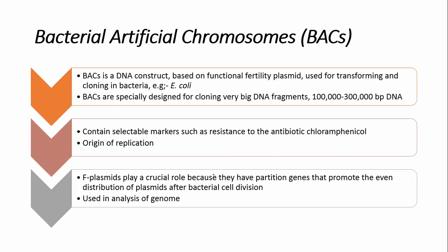A bacterial artificial chromosome is a DNA construct based on the function of the fertility (F) plasmid. They are also used in transforming and cloning in E. coli cells.